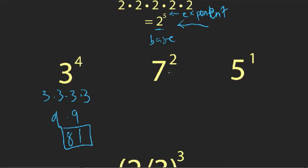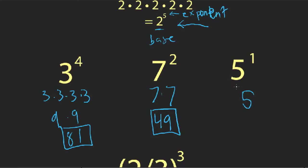How about seven to the second power? You've seen this before when we talked about numbers being squared in the quadratic equations videos — it's just one kind of exponent. Seven squared is just seven times seven, which makes 49. Here's another one: five to the first power. The exponent tells us how many fives we want, so if we only want one five, that's all we get. Any number raised to the first power is just that number itself.